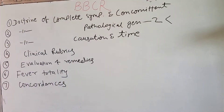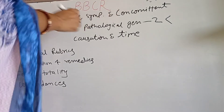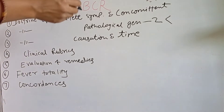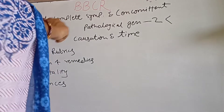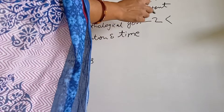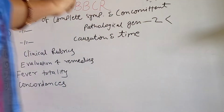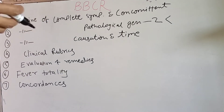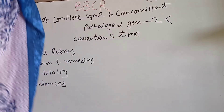The second caution point is that there are very few rubrics in this pathological general. The third caution point is that the medicine should not be used just because it covers two pathologies in two or more parts — it should agree with the whole picture. When we have a group of medicines, we use mental generals, physical generals, constitution type, and other parameters to differentiate and indicate the medicine.